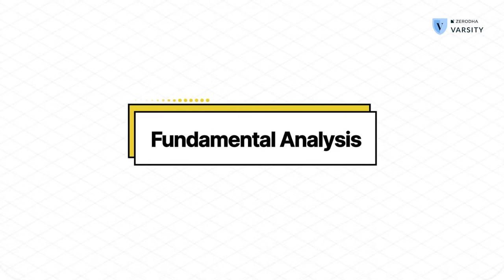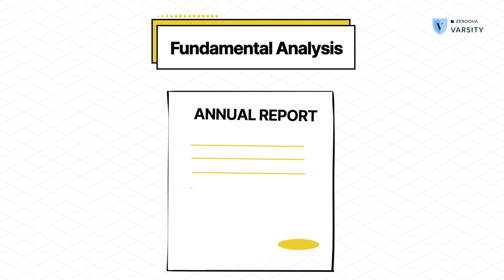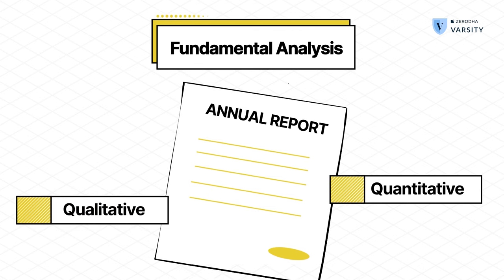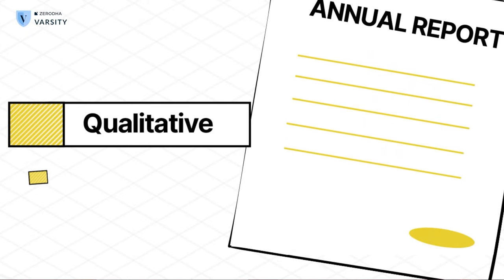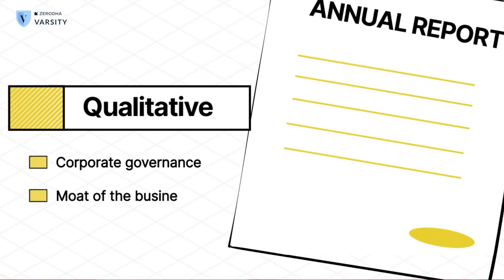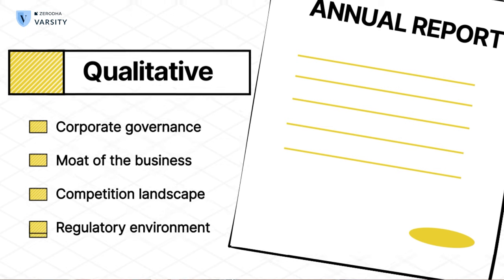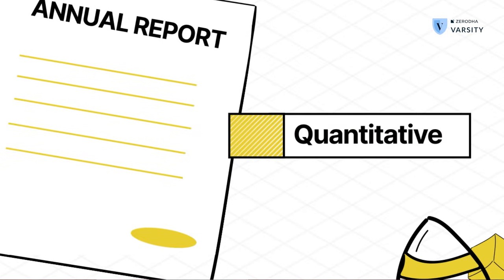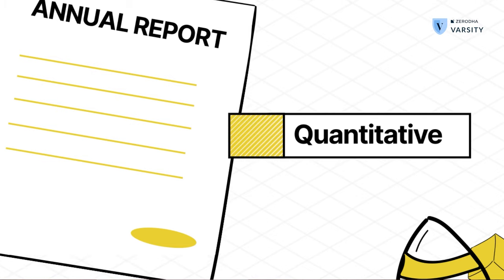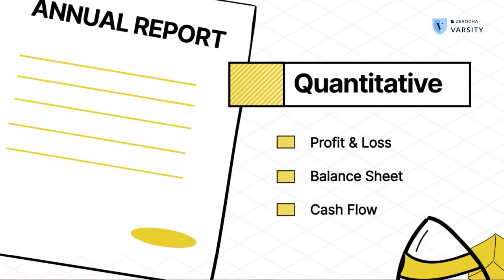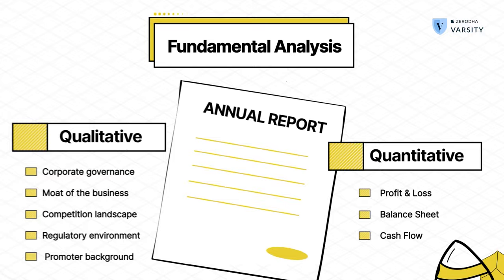In fundamental analysis, you deep dive into a company's annual report to understand how the company is doing from a qualitative and quantitative perspective. In qualitative analysis, you look for factors such as corporate governance, the moat of the business, the competitive landscape, the regulatory environment it operates in, and the promoter's background. In quantitative analysis, you take a deep dive into the company's financials such as the profit and loss, the balance sheet, and the cash flow statements, and check how stable the financials are. Finally, you combine both the qualitative and quantitative aspects and arrive at a decision to buy or sell the company's stock.